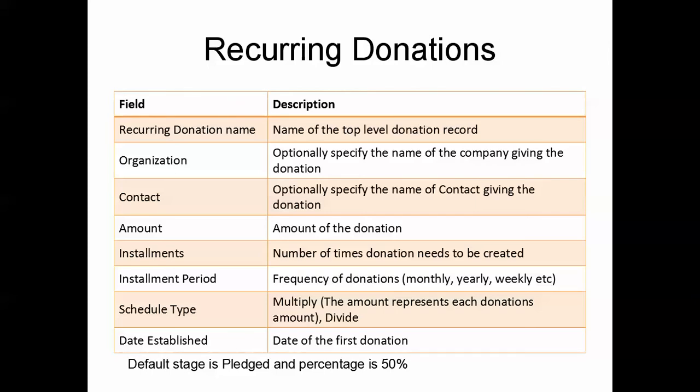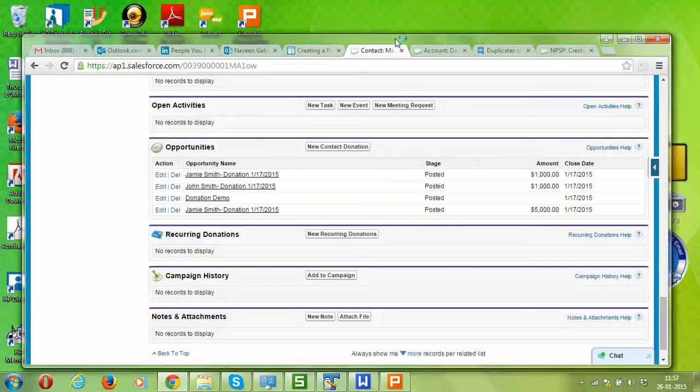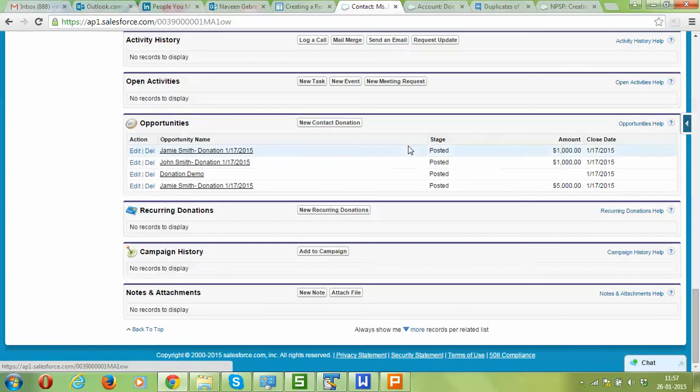The Date Established field is set to the date when the first donation is being given. The default stage is Pledged and the probability is set to 50 percent. Now let's go ahead and see a quick demo of recurring donations.